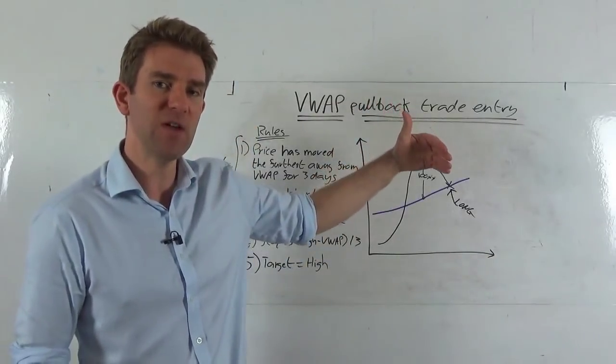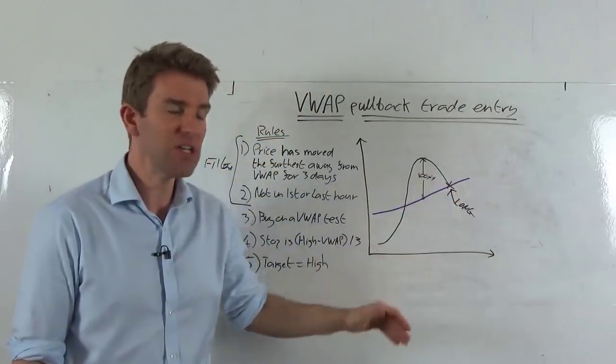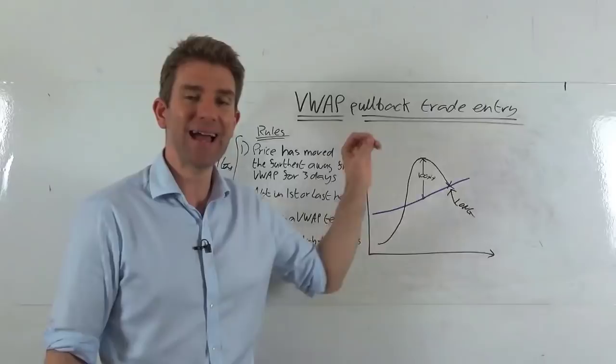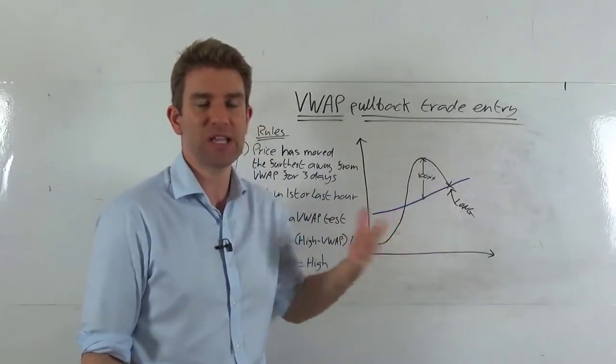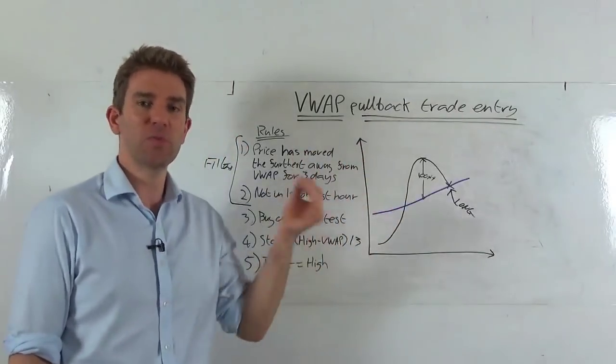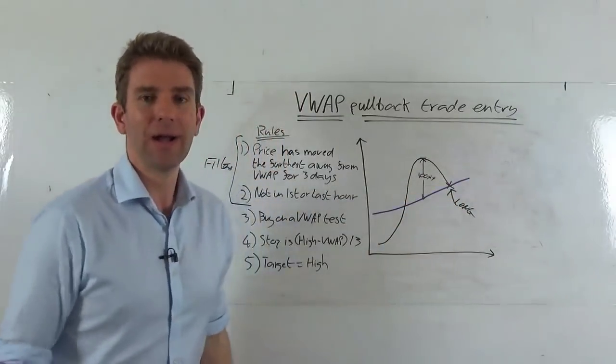And this is where we're going long, right? Because the idea is we've moved furthest away from the VWAP for the last three days, so we've got quite a bit of buying interest. So on this retracement back to what people consider value, we're expecting algos to step up their buying interest, we're expecting other people to step up their buying interest, and to generally be a level of support. So we're going to front run that support. So as we push up, we pull down, we're going long.